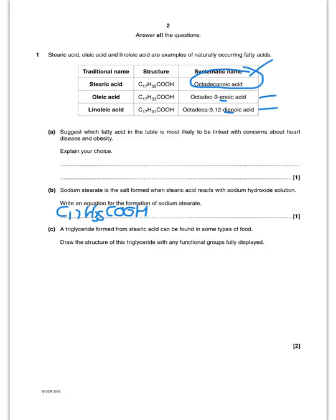Right, so I'm going to write the equation now. When stearic acid reacts with sodium hydroxide, this is just an acid plus alkali reaction, so it's going to give me C17H35COO- Na+ plus H2O.